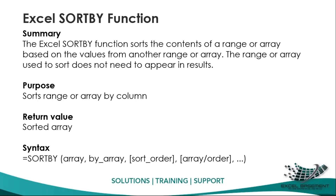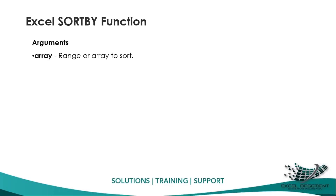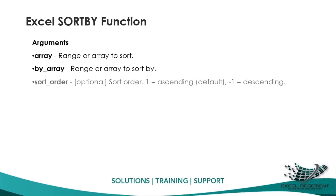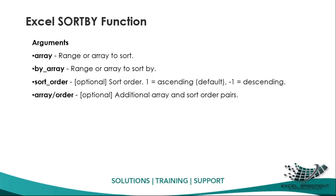The SORTBY syntax has more than four arguments. 'Array' is the range or group of cells to sort — this is compulsory. 'By_array' is also compulsory — this is the range or array to sort by, the base point for sorting. Optional arguments include 'sort_order': write 1 for ascending (the default) or minus 1 for descending, plus additional array/sort_order pairs.